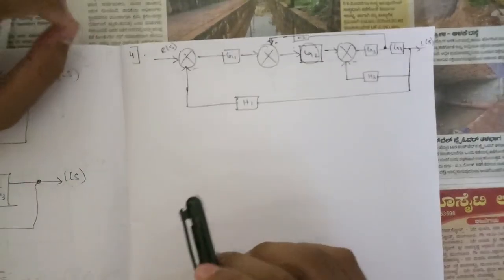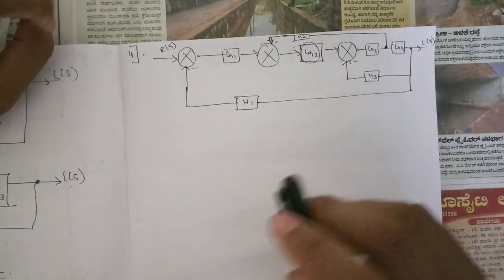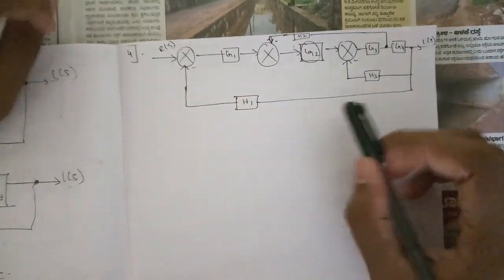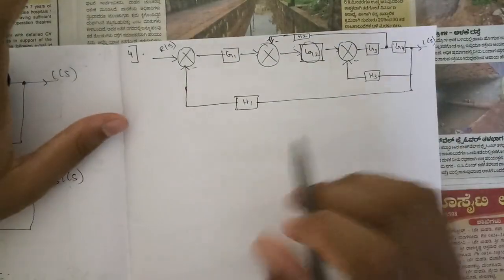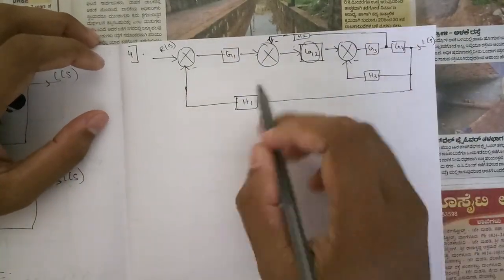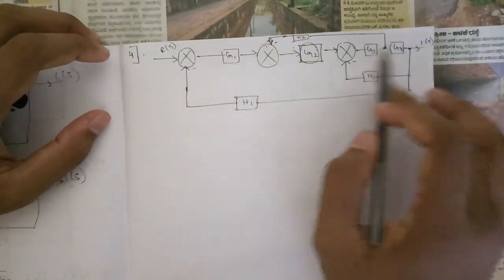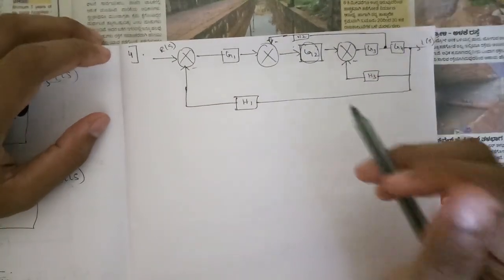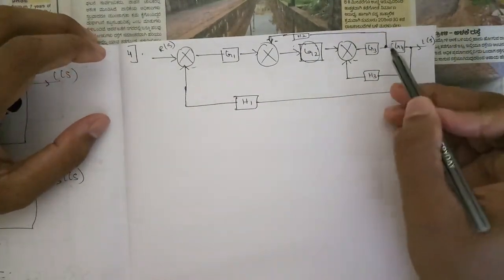So this is the next block here. What we need to do is reduce it and find the transfer function. So here first thing you need to analyze this block diagram very carefully, what all are the components given: G1, G2, G3, G4, H1, H2, H3.